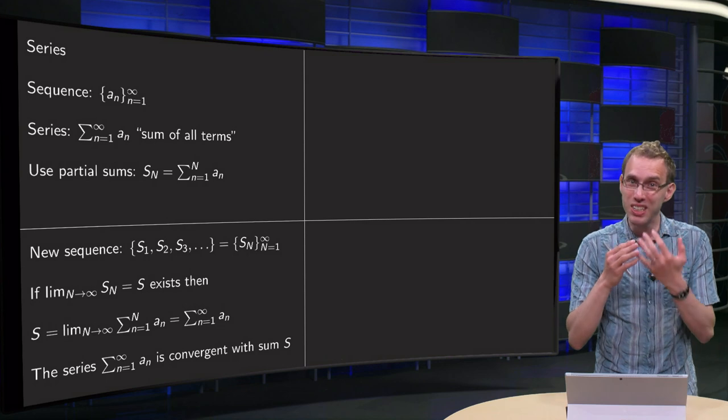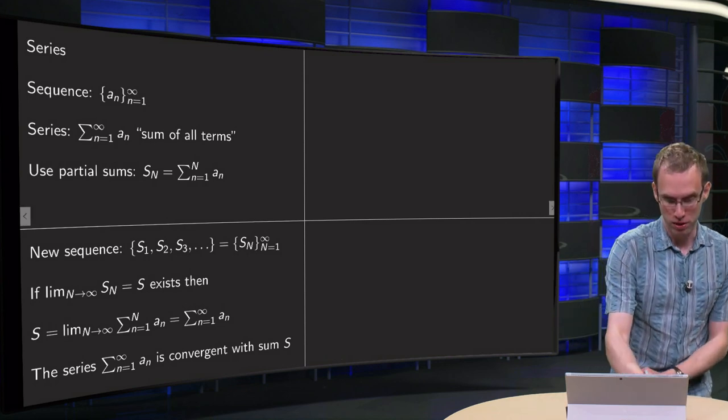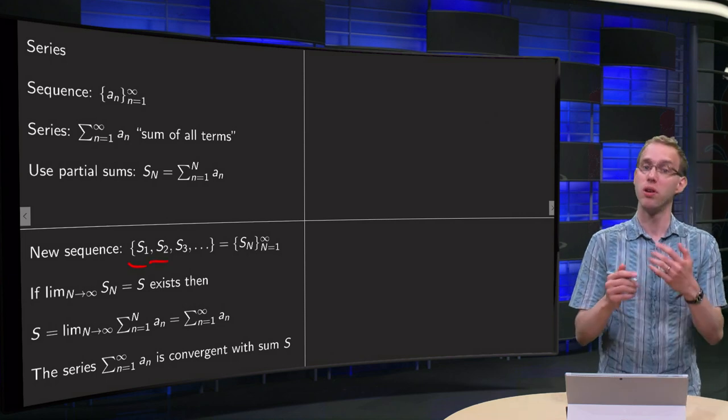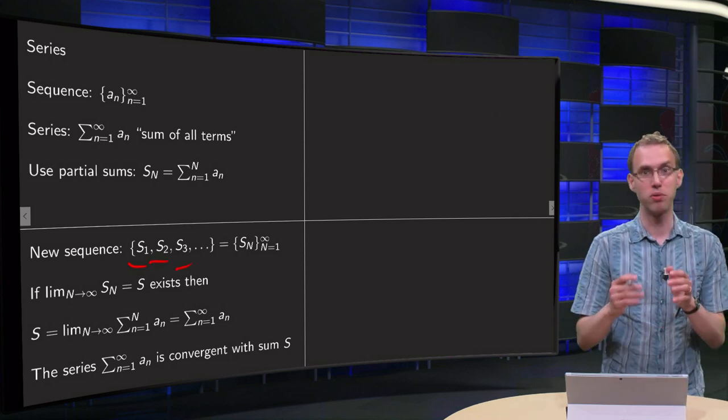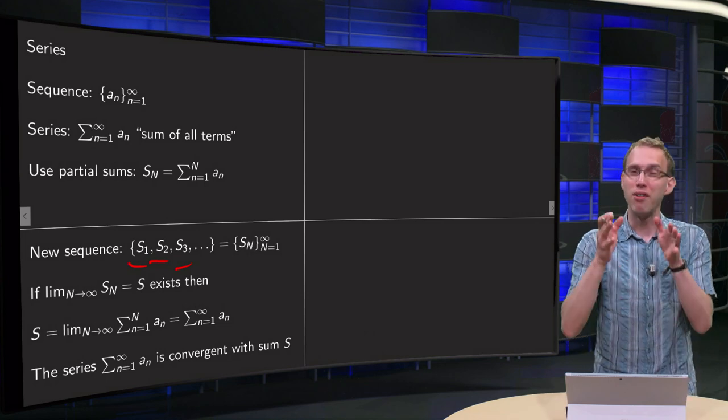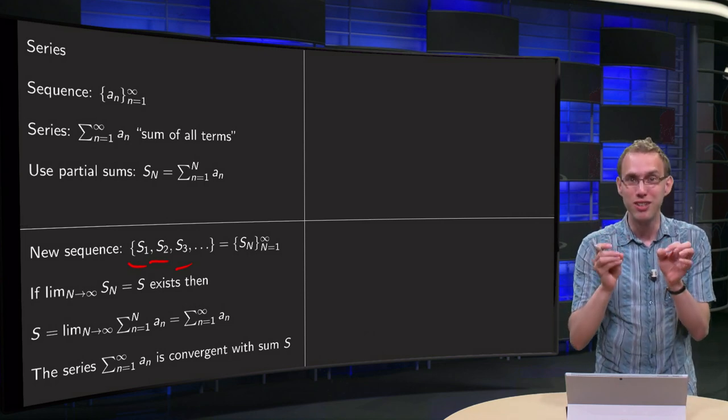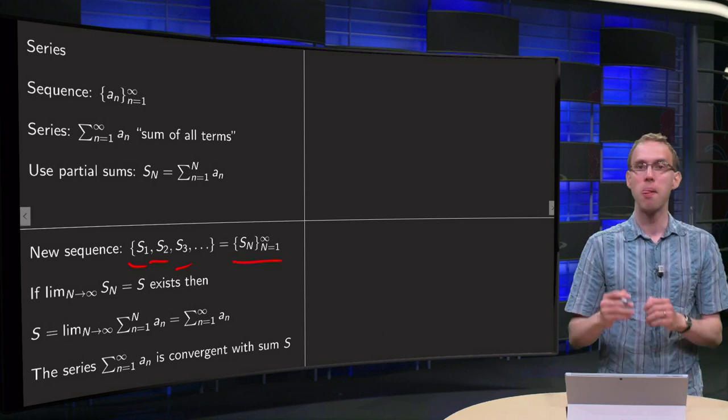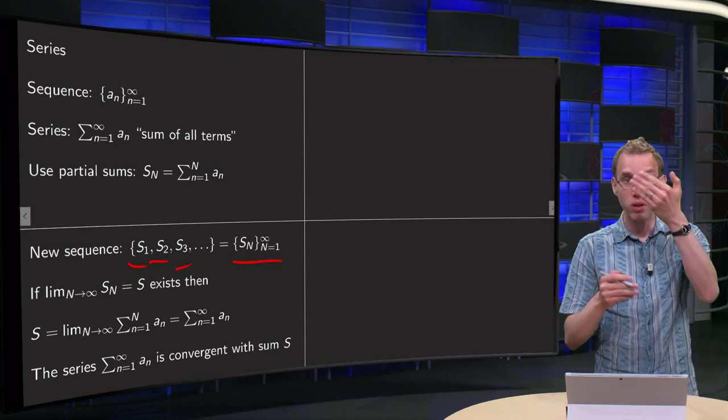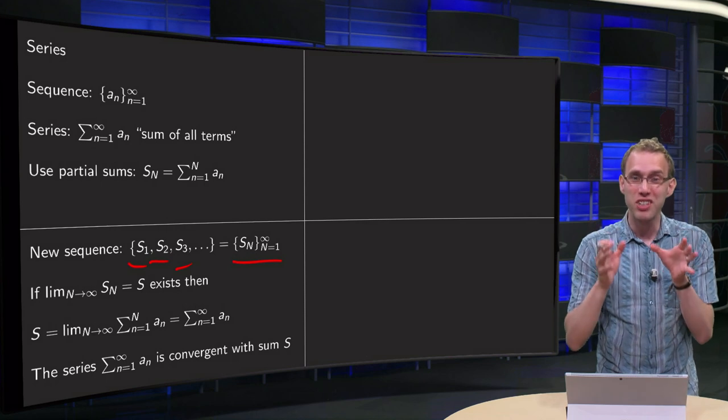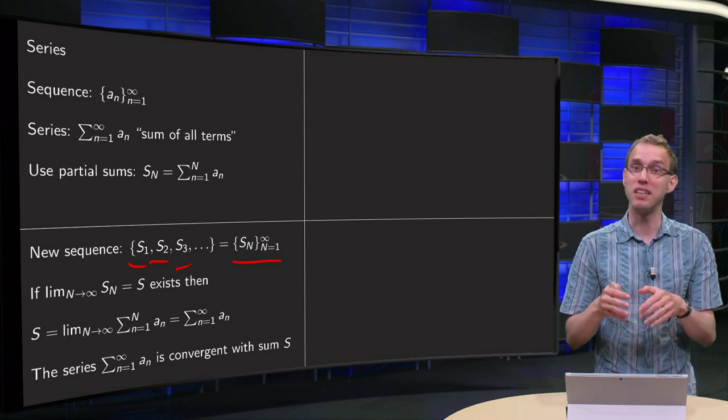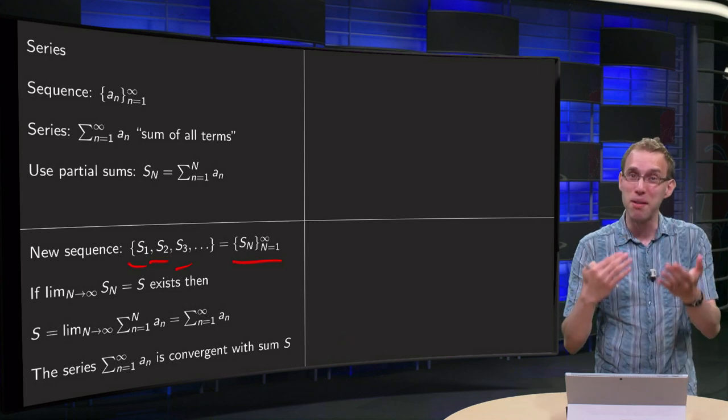We form a new sequence. We have our first partial sum, we know what it is, it is just a_1. The second partial sum a_1 plus a_2, third partial sum a_1 plus a_2 plus a_3, and so on and so on. We form a new sequence, a sequence of partial sums, S_N, capital N from 1 to infinity. But now I have a sequence, and now I can let capital N go to infinity, because that pertains to taking the limit of a sequence, and we have already learned how to deal with sequences.